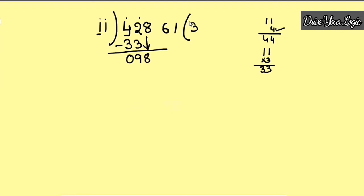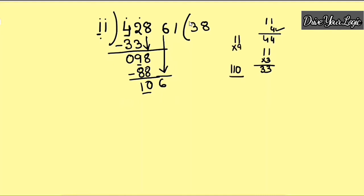Now bring down the next digit: you have 98. Look at this number and the divisor. Think: 11 into 9 would be 99, which is more than 98, so take the number before — try 8. 11 into 8 is 88. Subtract: 98 minus 88 is 10. Bring down the next digit 6, giving 106. Now see the last digit: it looks like 10, but the divisor is 11. 11 into 10 gives 110, which is too much, so try 9: 11 into 9 is 99.